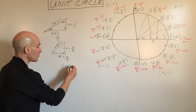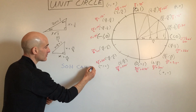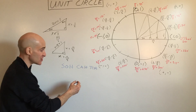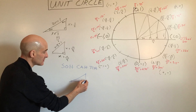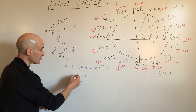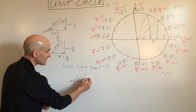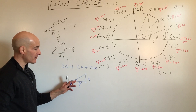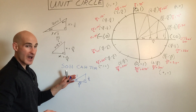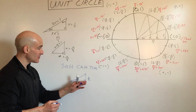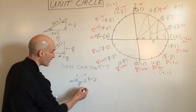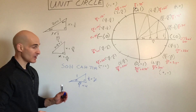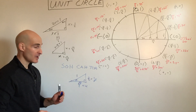Let's do a quick review of the SOHCAHTOA acronym. Sine is opposite over hypotenuse, cosine is adjacent over hypotenuse, tangent is opposite over adjacent. On the unit circle, the radius (hypotenuse) is one, so if one side is one-half and the other is √3/2, the sine of the angle is opposite over hypotenuse — dividing by 1 just gives you the y-value. So cosine is x over 1 and sine is y over 1.